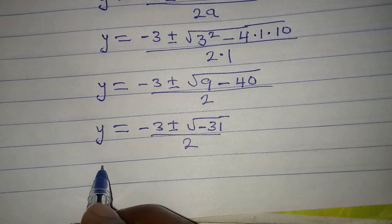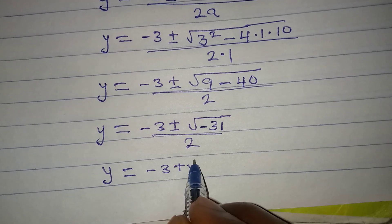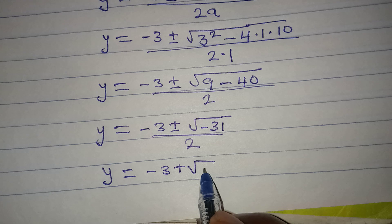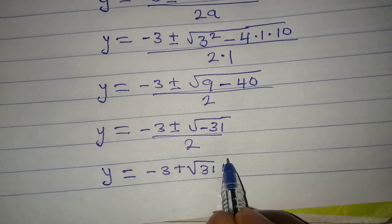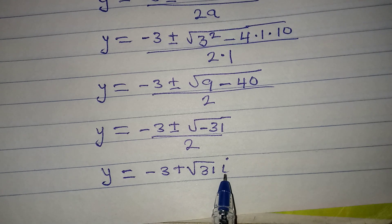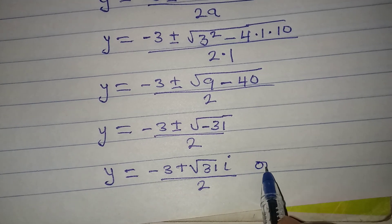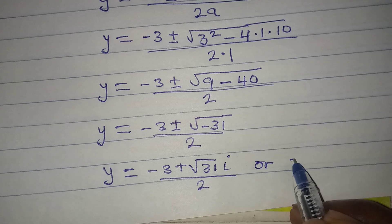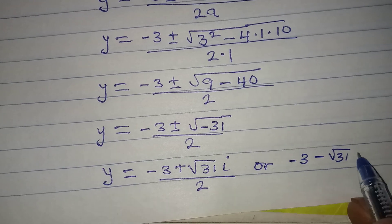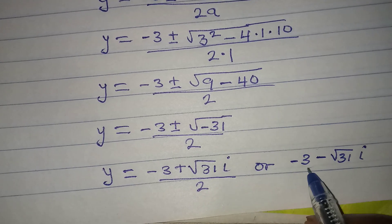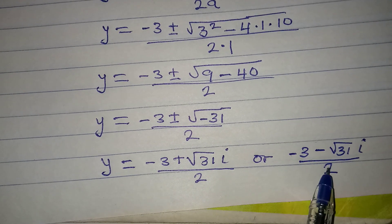Since we have a negative under the square root, we bring out i. So y equals minus 3 plus square root of 31 times i, all over 2, or y equals minus 3 minus square root of 31 times i, all over 2. These give us y₂ and y₃.